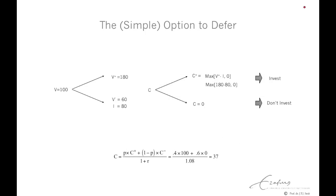To make a valuation of the simple option to defer, consider the following input parameters. Suppose the underlying value is 100, and we know something about the volatility: an upward factor of 1.8, so V+ is 180, and a downward factor of 0.6, so V− is 60. The exercise price, or investment outlay, to develop the field is 80. The expected probability of an upward move is 0.5, and of a downward move is also 0.5 — those are the true probabilities.